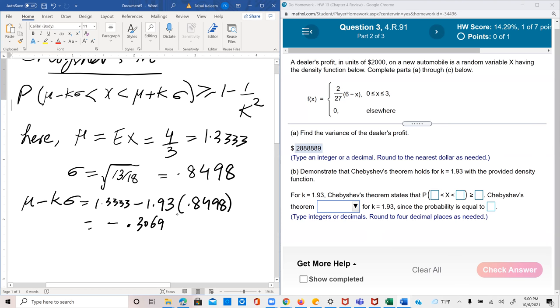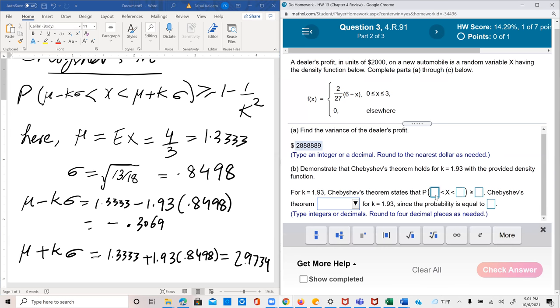And similarly, let's calculate μ plus k sigma. And that would be 1.3333 plus 1.93 times 0.8498 equals 2.9734.